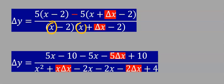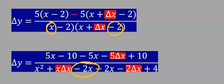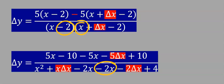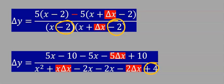At the denominator: x times x gives x², x times Δx gives x·Δx, x times −2 gives −2x. Then −2 times x gives −2x, −2 times Δx gives −2Δx, and −2 times −2 gives +4. After this distribution and expansion: 5x cancels −5x, and −10 cancels +10. At the numerator we are left with only −5Δx. At the denominator, −2x added to −2x gives −4x.